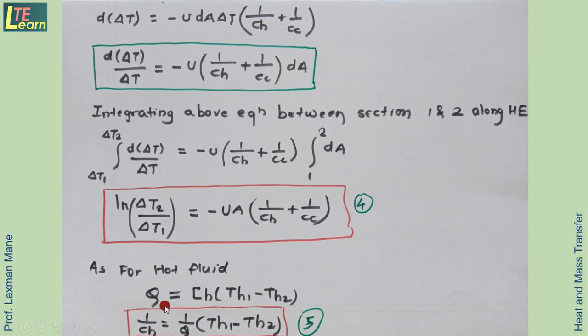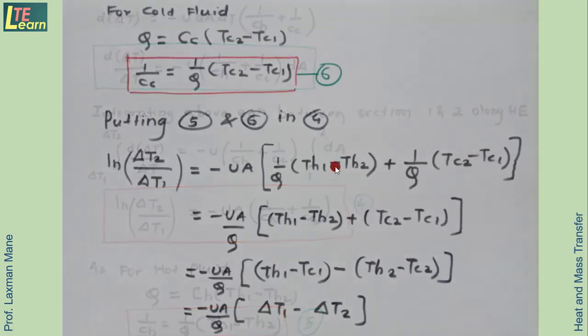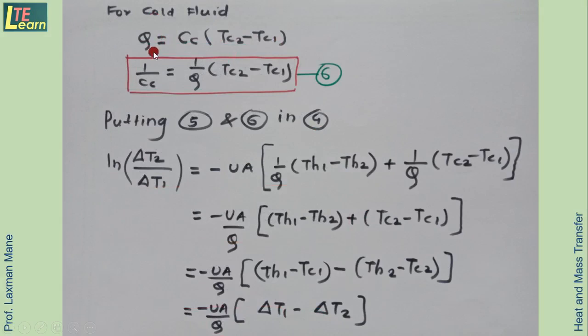Total heat transfer Q equals CH, the heat capacity, into TH1 minus TH2. This is the equation for hot fluid. Thus 1 upon CH equals 1 upon Q into the temperature difference TH1 minus TH2, equation 5. For cold fluid, similarly Q equals CC into TC2 minus TC1. So 1 upon CC equals 1 upon Q into TC2 minus TC1, equation 6.